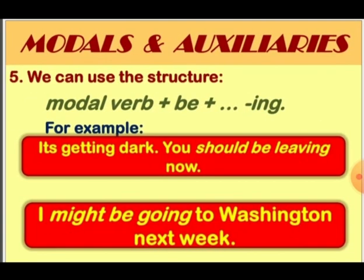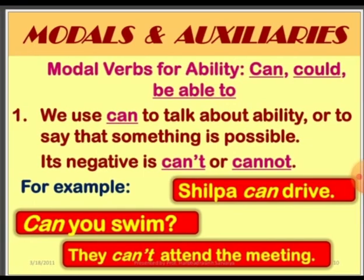Questions are formed by inverting the subject and the modal verb. For example: 'Rajesh can sing' becomes 'Can Rajesh sing?' — not 'Does Rajesh can sing' or 'Rajesh doesn't can sing.' We can also use the structure: modal verb + be + ing. For example: It's getting dark, you should be leaving now.